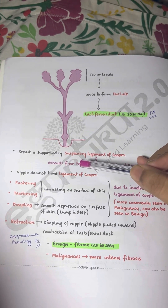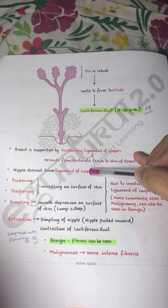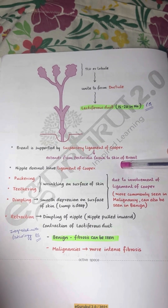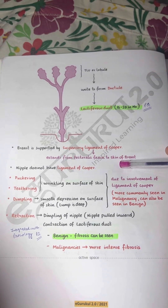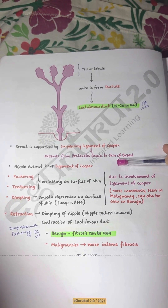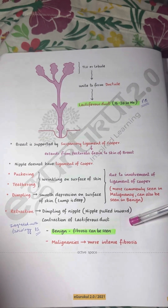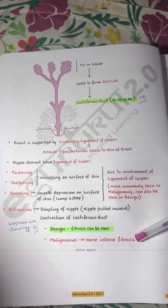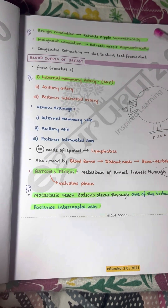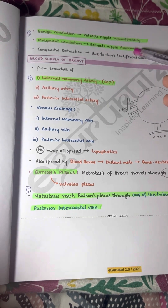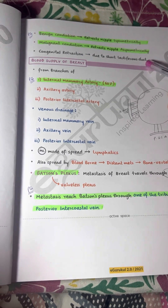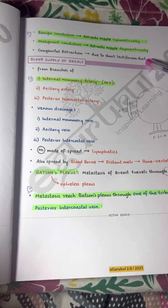The breast is supported by the suspensory ligaments of Cooper, which extend from the pectoralis fascia to the skin of the breast. The nipple has no ligament of Cooper. Puckering, tethering, and dimpling retractions occur in both benign and malignant conditions with intense fibrosis. The nipple is symmetrically retracted in benign and malignant conditions, whereas asymmetric retraction is seen in congenital conditions.